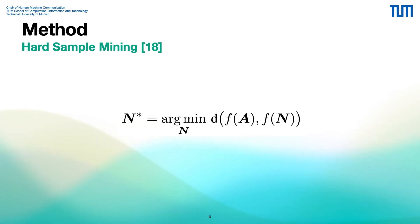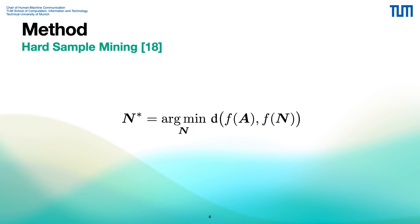In our paper we apply negative hard sample mining. We do this because our batches contain exactly two images for each identity, so for each identity we can find one positive image and many negative images. It is necessary to select only the hardest negative samples — that is, the one with the smallest distance to the anchor image.